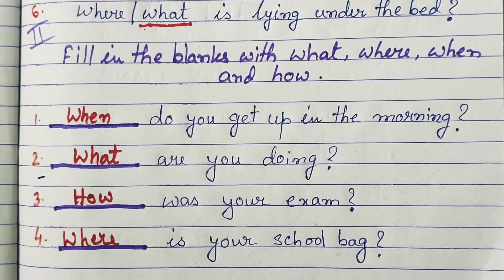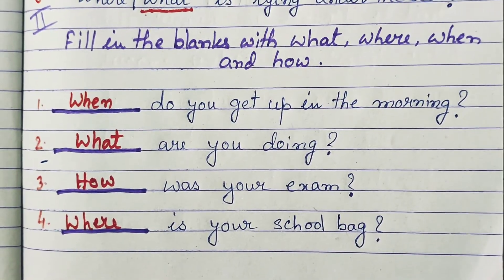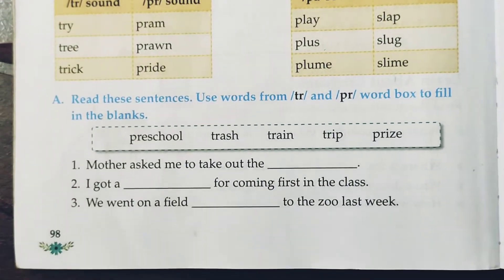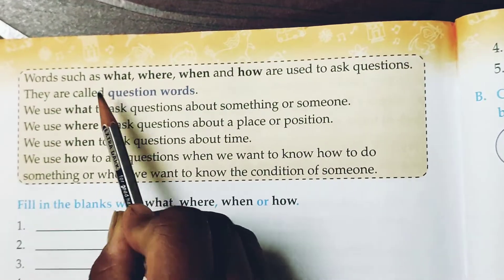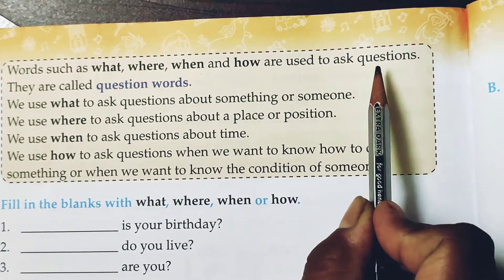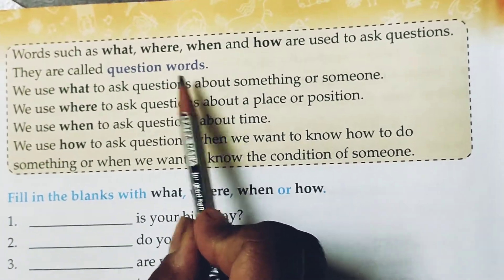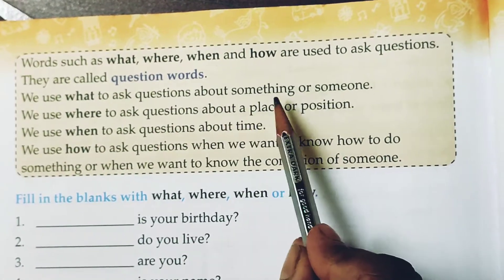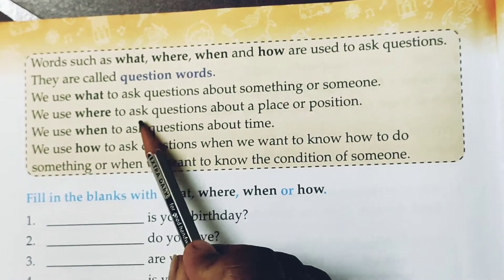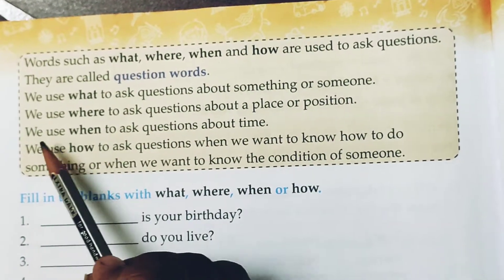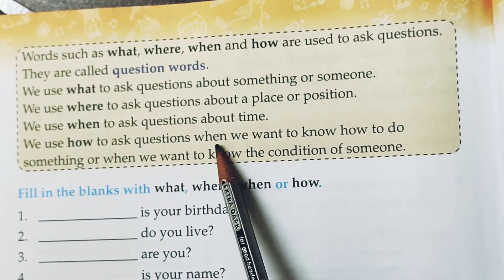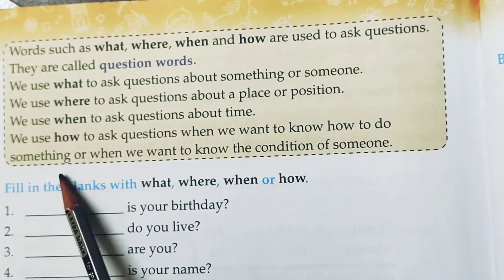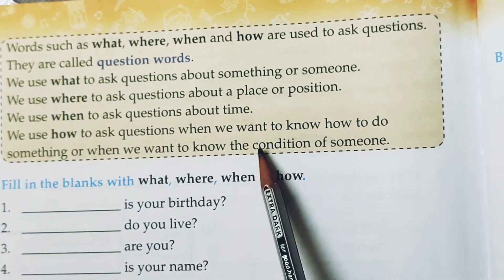Okay my dear students, now this is clear to you. Go and take out your English book and open page number 98. Words such as 'what,' 'where,' 'when,' and 'how' are used to ask questions — they are called question words. We use 'what' to ask about something or someone. We use 'where' to ask about a place or position. We use 'when' to ask about time. We use 'how' when we want to know how to do something or to know the condition of someone.